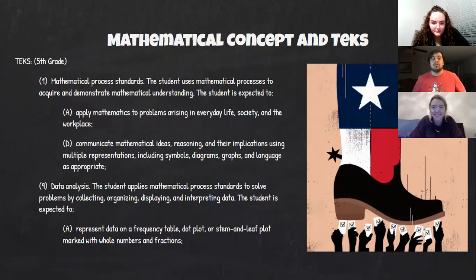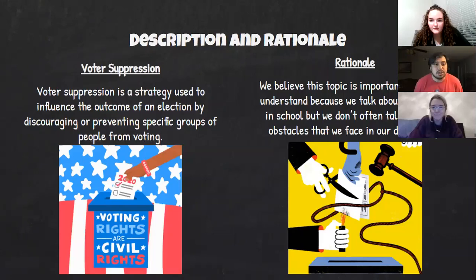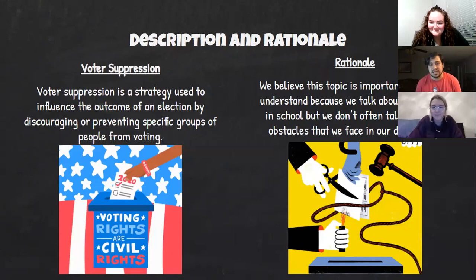This is our description of voter suppression and our rationale. Voter suppression is a strategy used to influence the outcome of an election by discouraging or preventing specific groups of people from voting. Our rationale is we believe this topic is important for kids to understand because we talk about democracy in school, but we don't often talk about the obstacles that we face in our democracy.